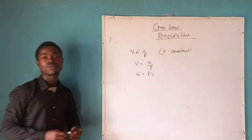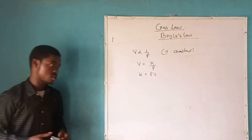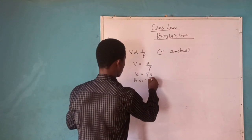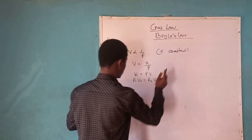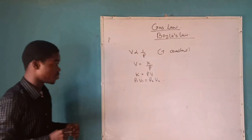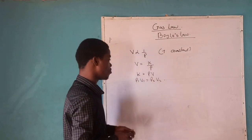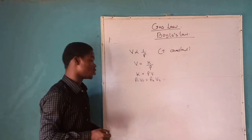Now, especially when we have two scenarios, we have two cases, so I pronounce it by P1V1 equal to P2V2, where P1 is the first pressure, V1 is the first volume, and P2 is the second pressure, and V2 is the second volume.